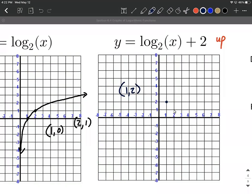And then we had a second key point that was at 2,1 initially. That moves up 2 units and it's going to be at 2,3.